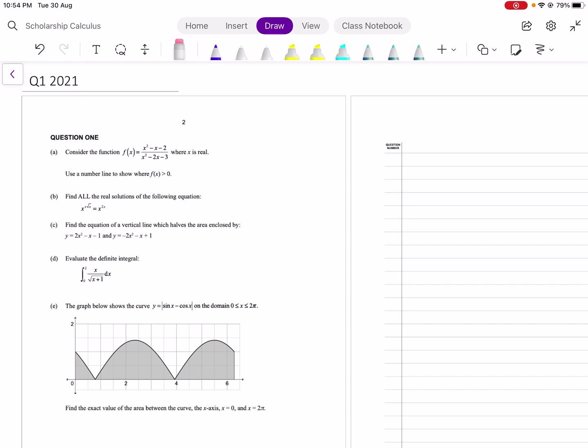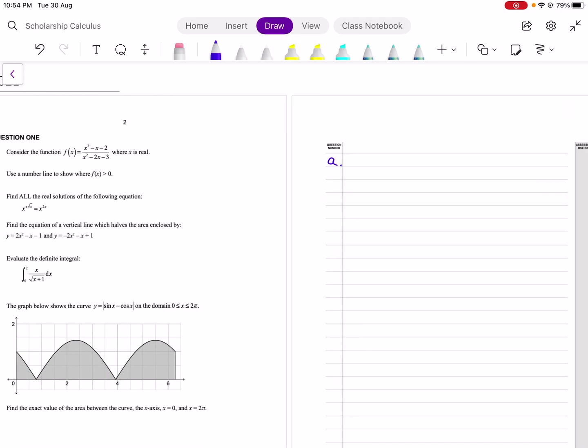The first one asks us to use a number line to show where this function here is greater than zero. So one of the common mistakes that students make when given something that's a rational function is that they incorrectly cancel things. So if we factorise the top and the bottom, this problem is kind of designed for us to do the thing that's incorrect.